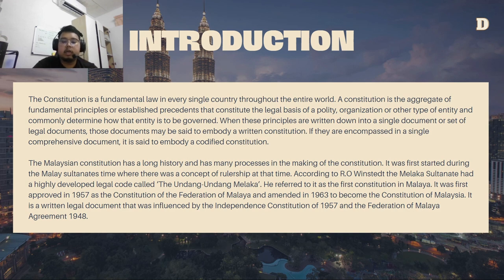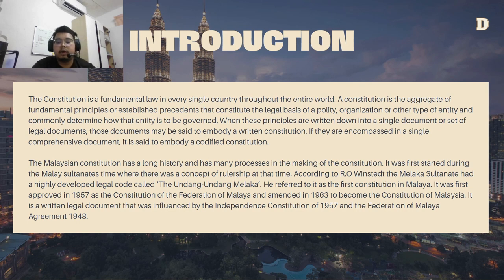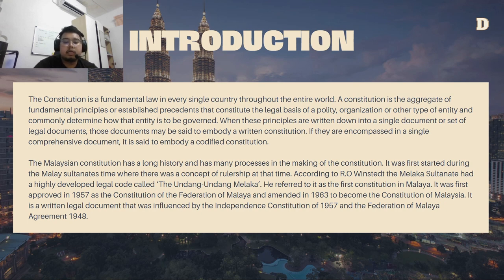The Malaysian constitution has a long history and many processes in its making. It was first started during the Malay Sultanate era where there was a concept of rulership. According to one of the British residents, R.O. Winstead, the Melaka Sultanate had a highly developed legal code called the Undang-Undang Melaka, which he referred to as the first constitution in Malaya. It was first approved in 1957 as the constitution of the Federation of Malaya and amended in 1963 to become the constitution of Malaysia. It is a written legal document influenced by the independence constitution of 1957 and the Federation of Malaya Agreement 1948.